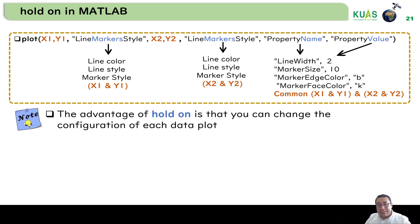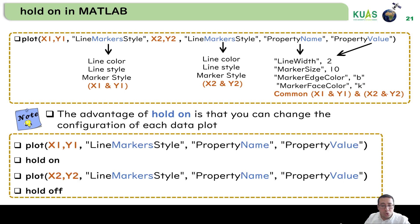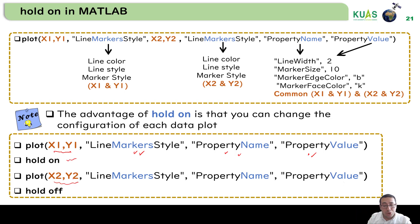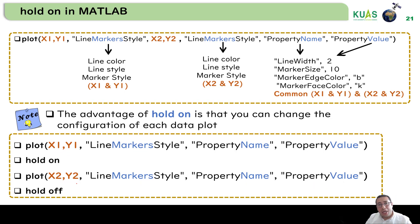We can't change the line width for x1,y1 to 2 and x2,y2 to 4 or 0.5 separately, because they are shared. The advantage of hold on is that it gives us more control about each curve we need to adjust. Simply speaking, we write plot(x1,y1) with its own line and marker style and property values, then we say hold on — meaning keep the figure — then define x2,y2 with its own properties.